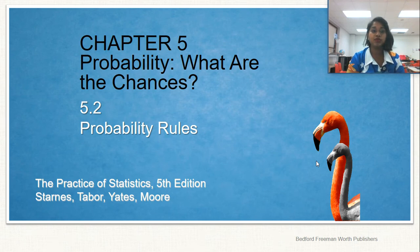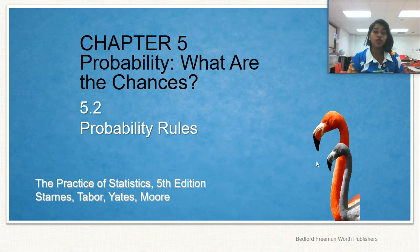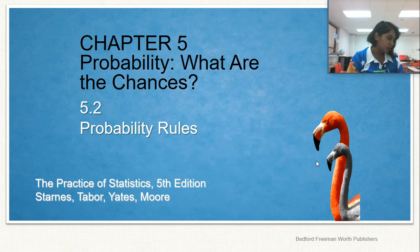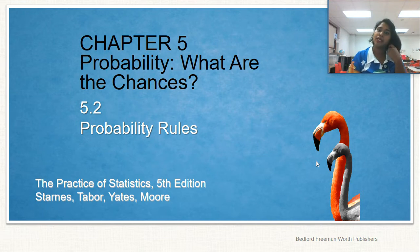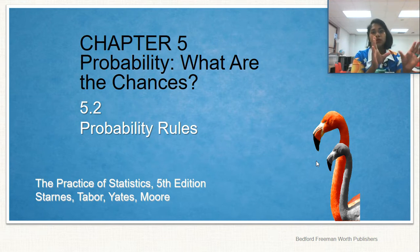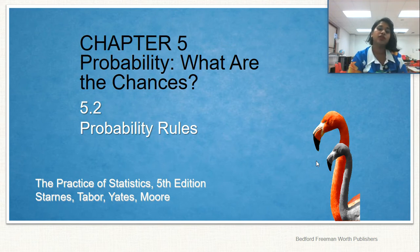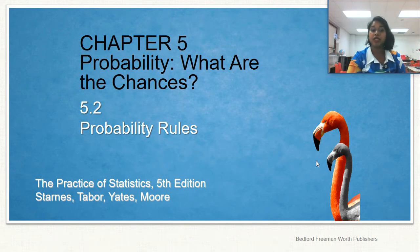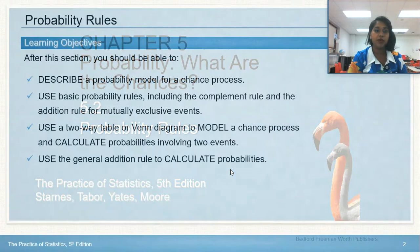Hi, and welcome to part two of chapter five. We're talking about the probability rules — like what is an event, why would something be mutually exclusive or disjointed, what are our addition rules, what does the U mean, what does the upside-down U mean — that's what we're going to cover in this particular video.